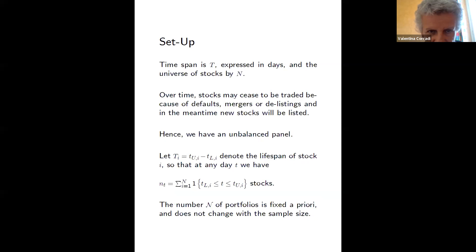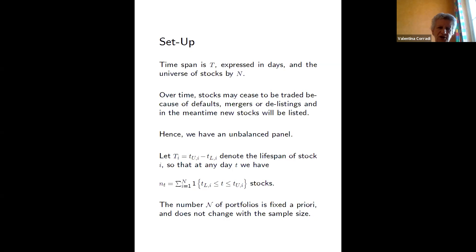The setup: we take a time span T expressed in days — the total period we are considering. Over this period we consider all stocks which have been alive for at least a short period. So n is the universe of stocks that has been alive during the time span. The panel is unbalanced because stocks enter and exit due to listing, delisting, mergers, and so on. We define t_i as the duration of stock i, which is a random variable but is independent of the return.